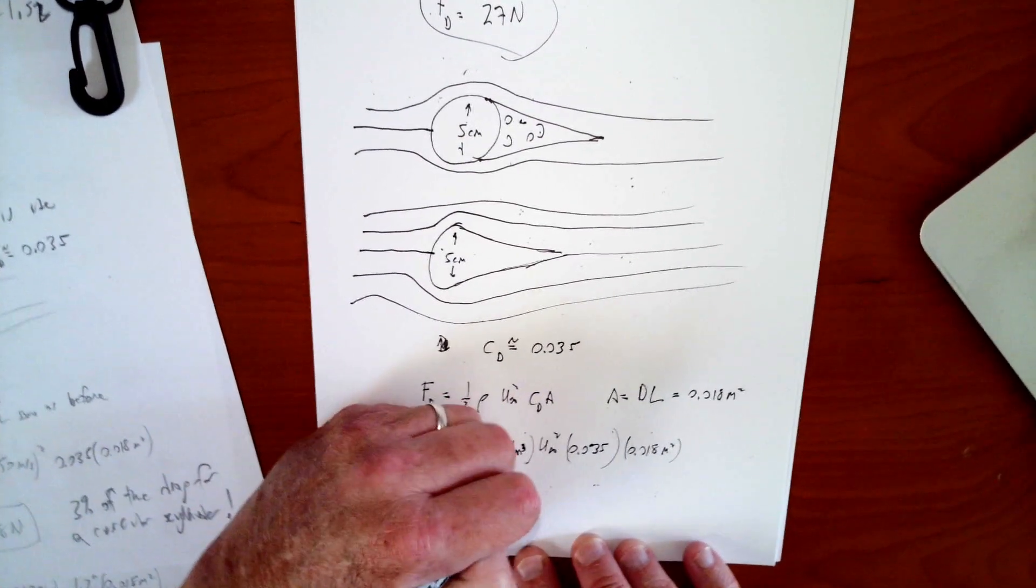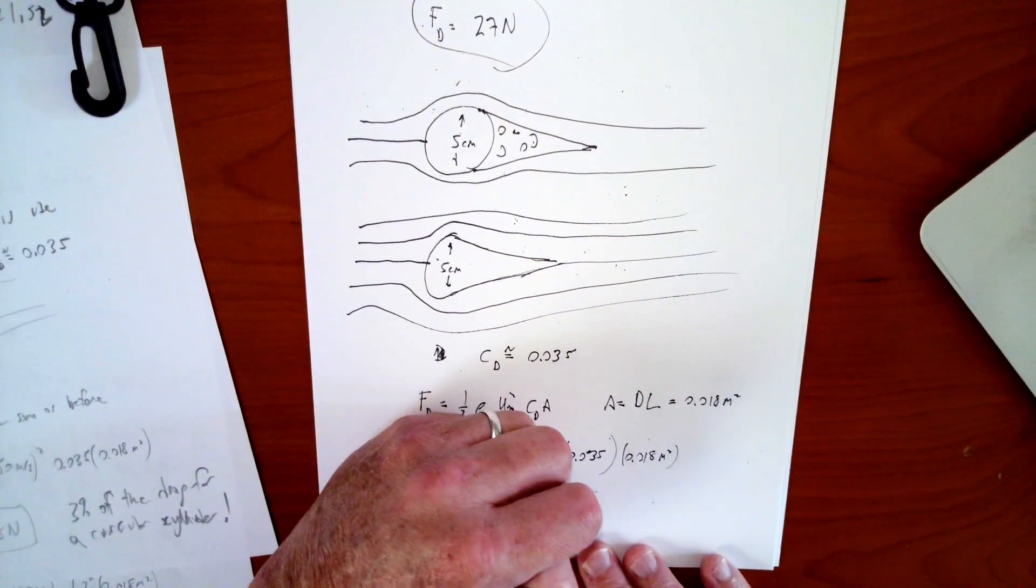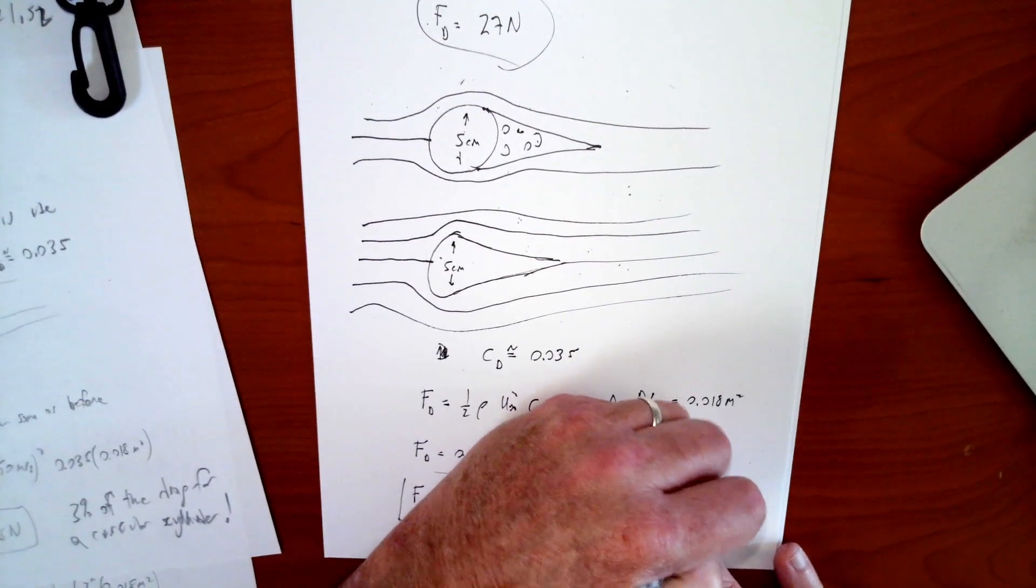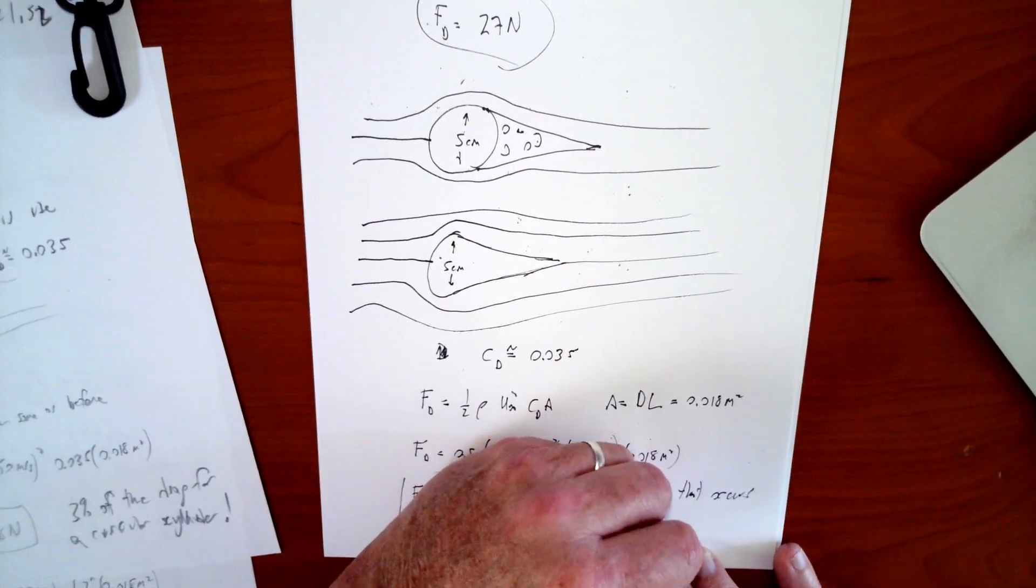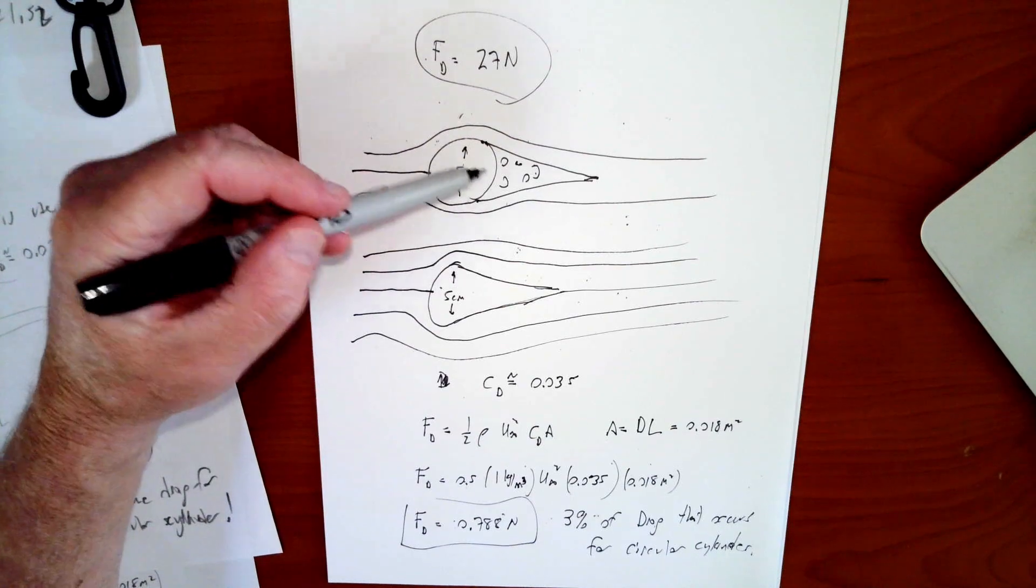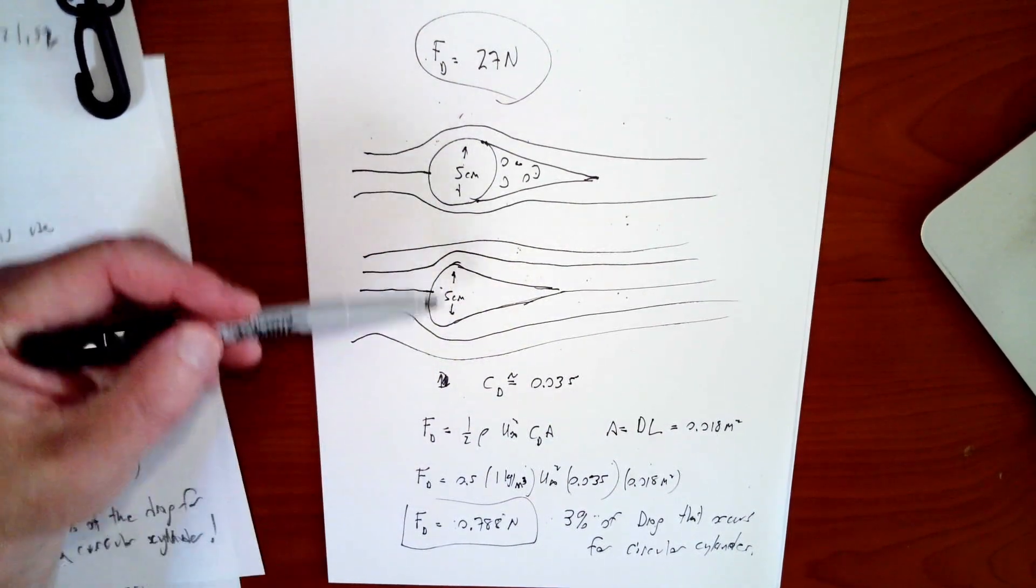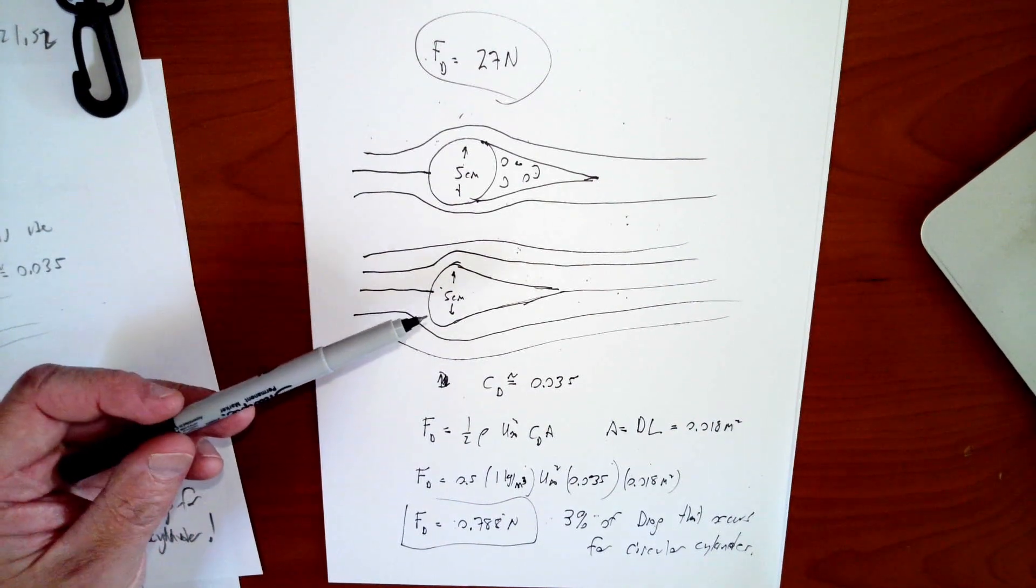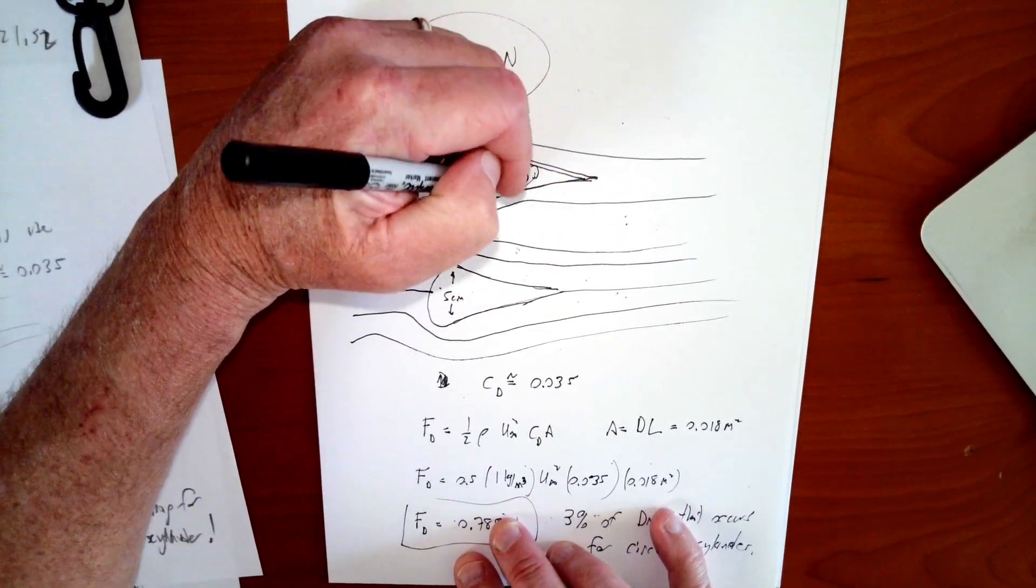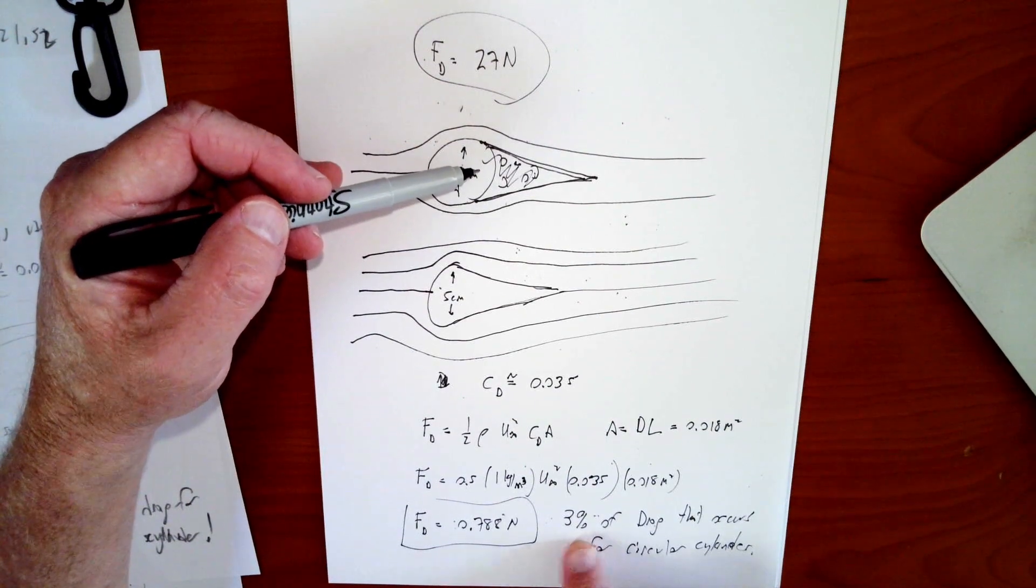And that comes out to be 0.788 newtons. So we went from 27 newtons to 0.788 newtons just by changing the shape. Nothing else changed. The velocity didn't change. So 3% of drag that occurs for circular cylinder. And circular cylinder is not a terrible choice. This isn't like we chose a parachute for one of them. We chose a reasonable strut, just like a simple pipe, 5 centimeter pipe, but that has hugely more drag than this teardrop. I mean, they're the same frontal area. So this really illustrates just how effective streamlining can really be. I mean, just by adding material to the back of this, basically just adding material, you could shape the material basically like this. You just add material to the back of this cylinder and you end up with a 90 something percent reduction in your drag force. So this is well worth doing.